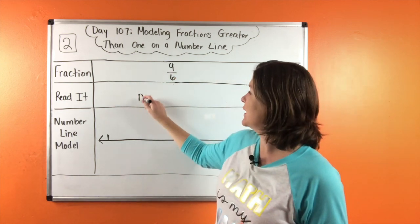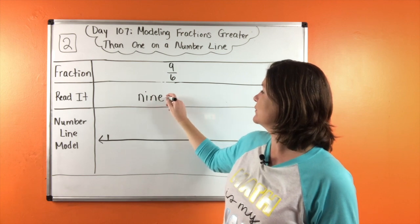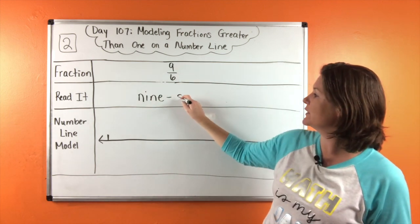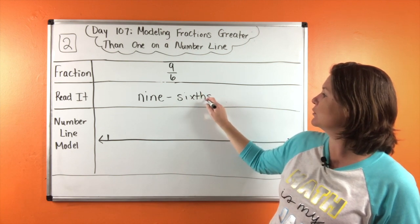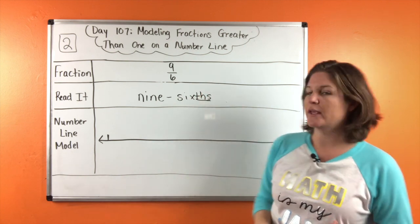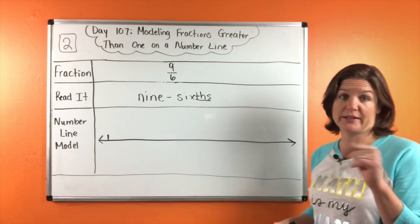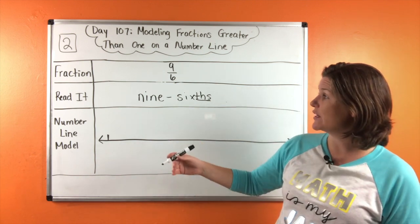So we're going to go ahead and read it. We have nine. We read that number regularly. And then we read this one like the grade level sixth grade, but plural because there's more than one. So check your spelling. Now let's go ahead and draw this on a number line.